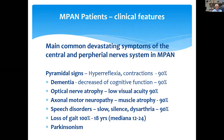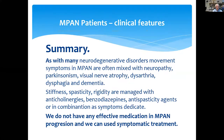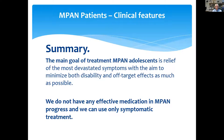In summary, the main devastating symptoms of the central nervous system in MPAN are pyramidal signs, dementia, optic neuropathy, axonal motor neuropathy, speech disorders, loss of gait after 18 years of life, and Parkinsonism. Many neurodegenerative movement symptoms in MPAN are often mixed with neuropathy, Parkinson's, visual nerve atrophy, dysarthria, dysphagia, and dementia. Stiffness and spasticity are managed with anticholinergics, benzodiazepines, antispasticity agents, or in combination. We do not have any effective disease-modifying medication for MPAN progression, so we use symptomatic treatment. The main goal is to relieve the most devastating symptoms while minimizing disability and off-target effects.